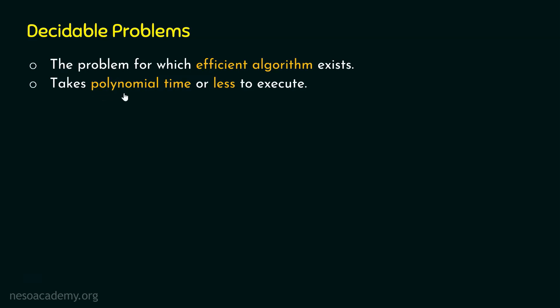Polynomial time means time is a function of a polynomial. A polynomial is a mathematical expression consisting of variables and coefficients combined through addition, subtraction, and multiplication, where variables are raised to non-negative integer exponents — for example, n² + 2n + 1. An algorithm which takes polynomial time has the property that as the size of the input increases, the time taken does not increase drastically.